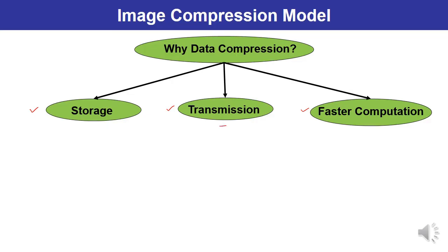The second factor is transmission. The transmission time of an image is directly proportional to the size of the image — if the image size is large, transmission time will be large; if size is less, transmission time will be less. Therefore the objective of image compression is to reduce transmission time by reducing image size. The third factor is faster computation — reduced data sometimes simplifies algorithm design, and if it simplifies algorithm design, it will facilitate faster execution of programs.